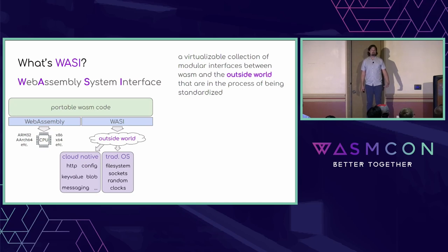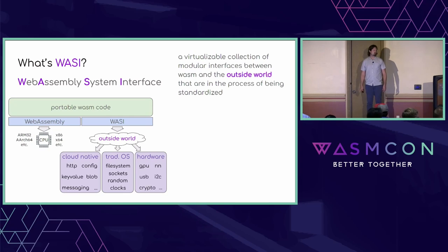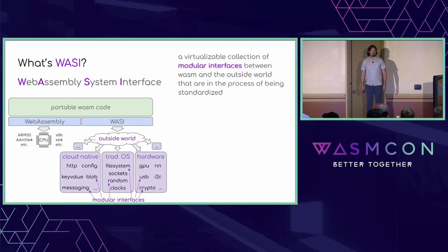It looked more like HTTP, config stores, key-value stores, blob stores, messaging, and more. As we started to want WASM to talk to more different kinds of hardware, we realized we need new interfaces to talk to GPUs, neural networks, USB, I2C, crypto, and more. There are just more embeddings of WASM coming, so more interfaces are necessary. Hosts need to be able to implement just the modular subset that makes sense on that host — so WASI is a collection of modular interfaces.